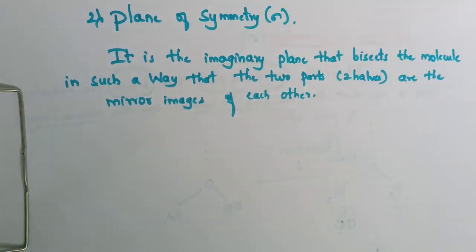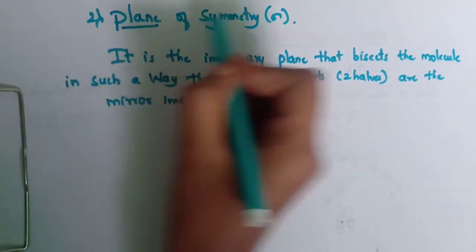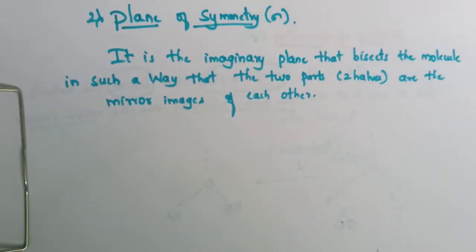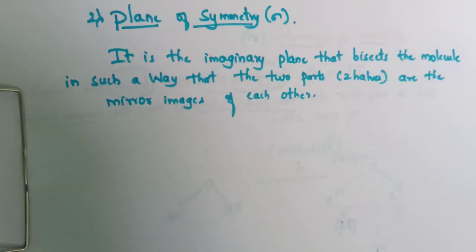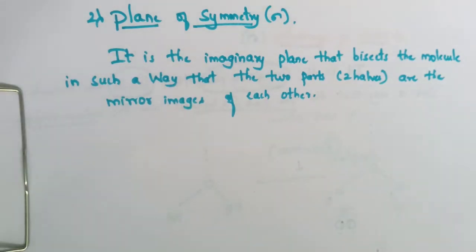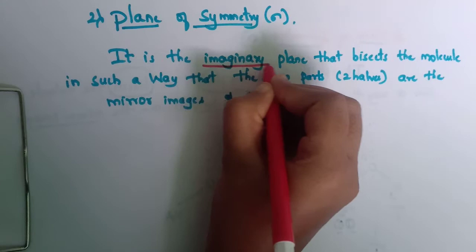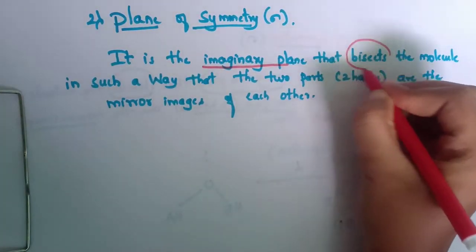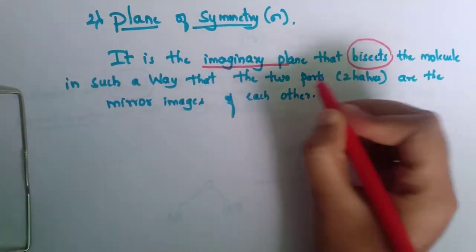Hi students, in today's video we are going to learn about the plane of symmetry. Before watching this, I have uploaded a video on axis of symmetry — please watch it for better understanding. The plane of symmetry is represented by the symbol sigma. Now let's see the definition: it is the imaginary plane that bisects the molecule in such a way that the two parts are mirror images of each other.